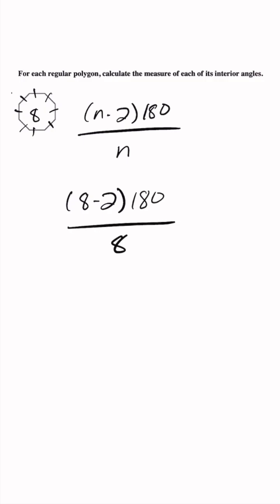And we can simplify that to 6 times 180 divided by 8. And so we can take that one step further because 6 times 180 is 1080.